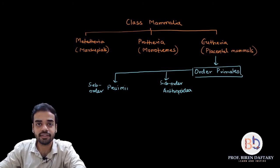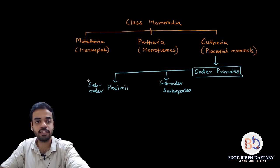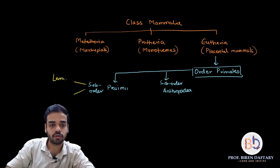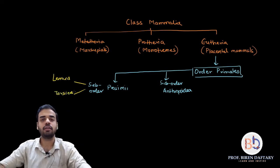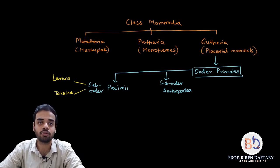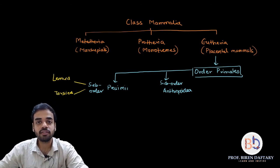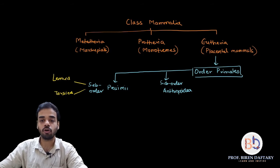Suborder Prosimi includes organisms like lemurs and tarsiers. These may look like monkeys but they are not actually monkeys — you can say they are precursors to monkeys. Prosimians are not basically monkeys, they just resemble them.